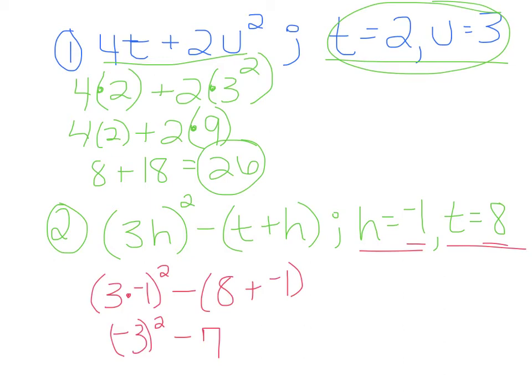Now negative 3 squared. Negative 3 squared is just positive 9 because it's negative 3 times negative 3. And remember a negative times negative is a positive minus 7 equals 2. So your answer for that would be 2.